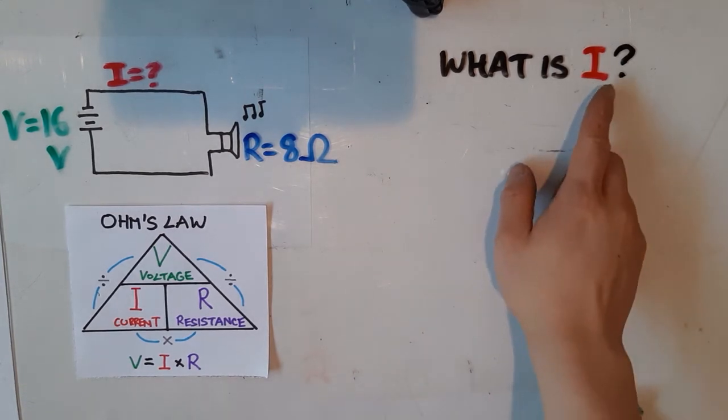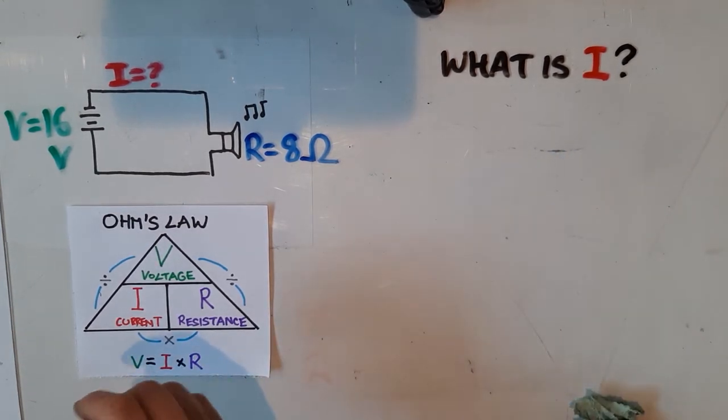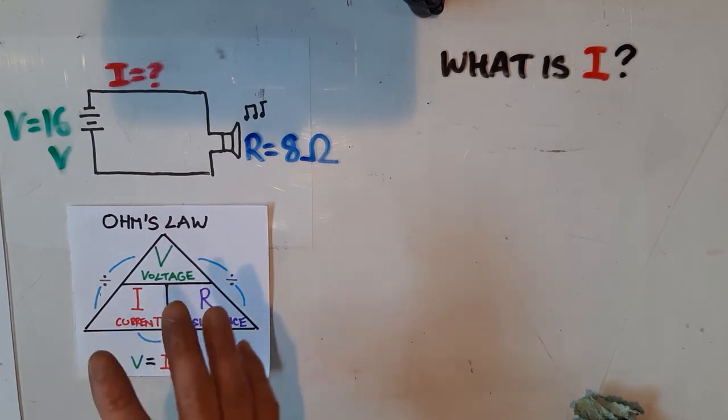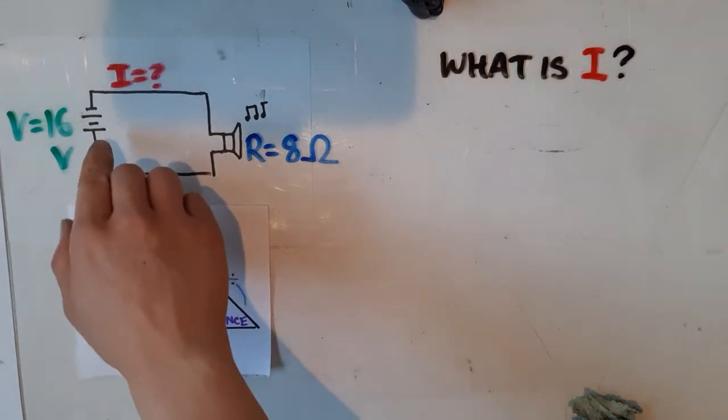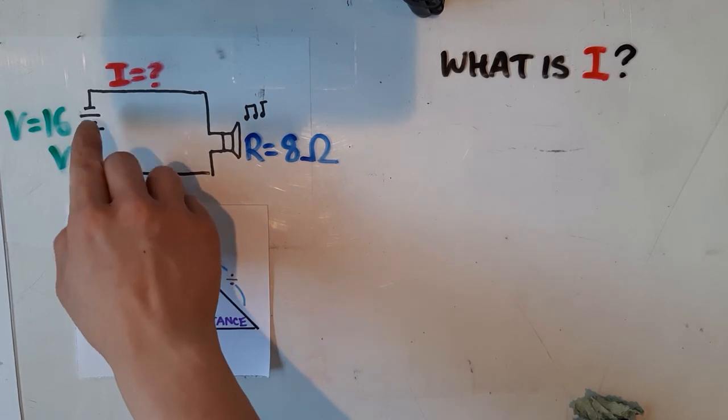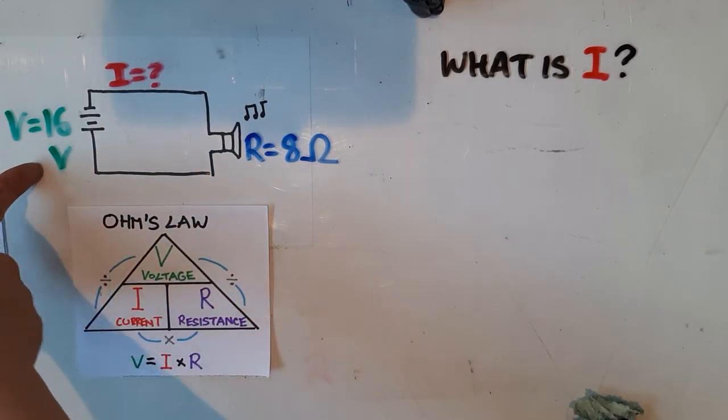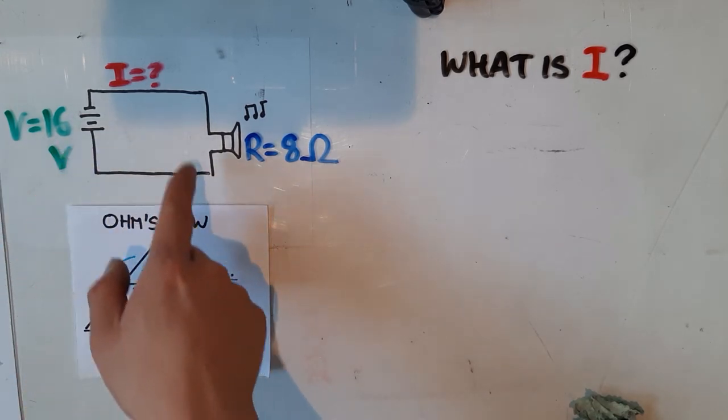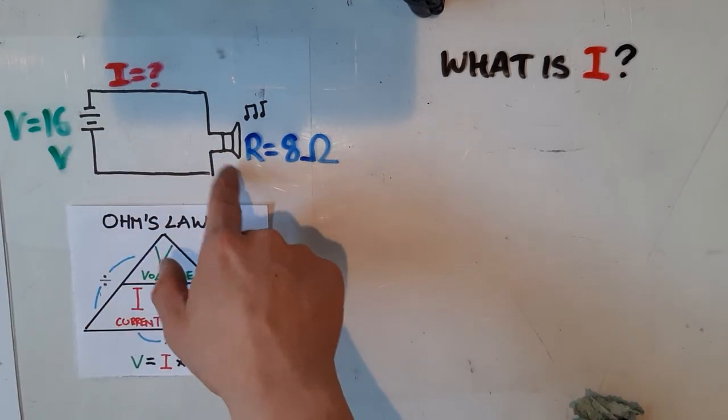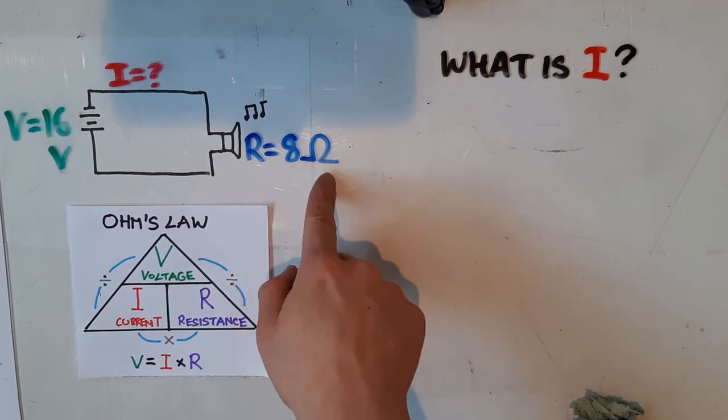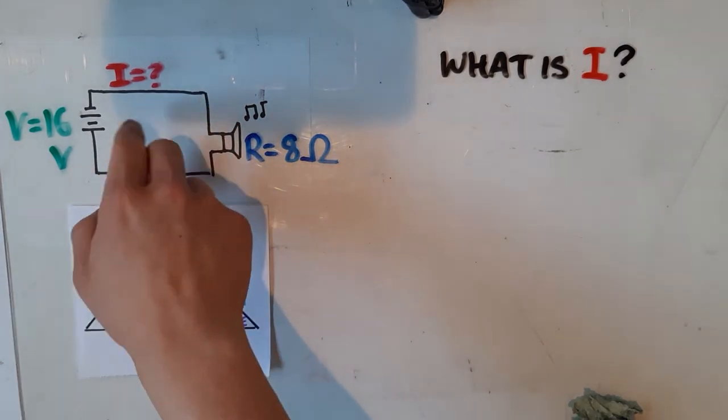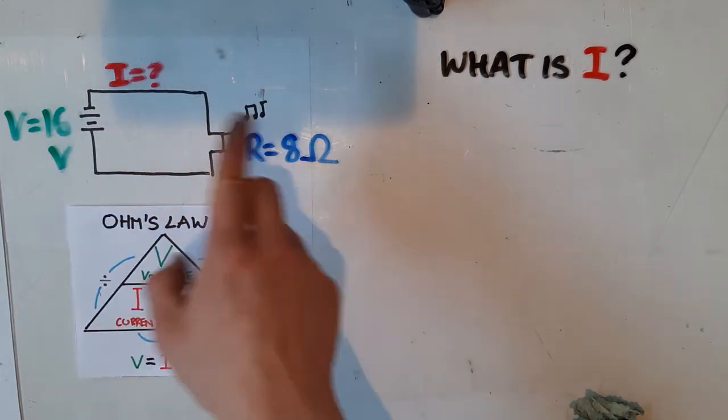Now I'm going to show you how to solve for I or current. So just to keep things fresh, I've changed the values. I've also gotten rid of the picture and replaced it with schematic symbols. But don't be scared. The logic is still the same. So over here in our diagram, we've got a battery, and that battery is providing 16 volts of electrical pressure. And that is flowing through a speaker, which offers 8 ohms of resistance. And what we're trying to figure out is what's the current that's going through the circuit.